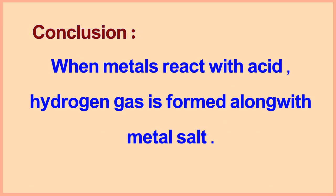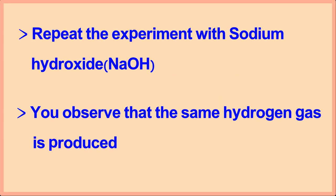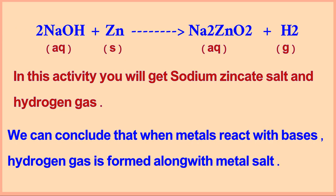Let us conclude the experiment. When metals react with acid, hydrogen gas is formed along with metal salt. Repeat the experiment with sodium hydroxide, which is a base — NaOH. We can conclude that when metals react with bases, hydrogen gas is formed along with metal salt.